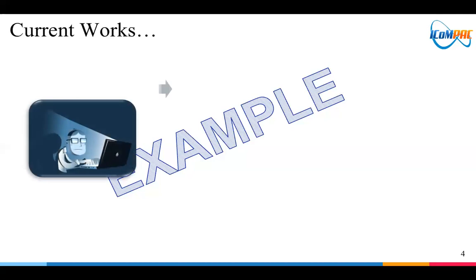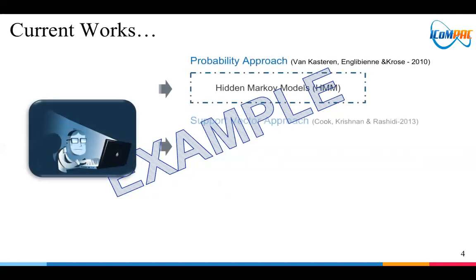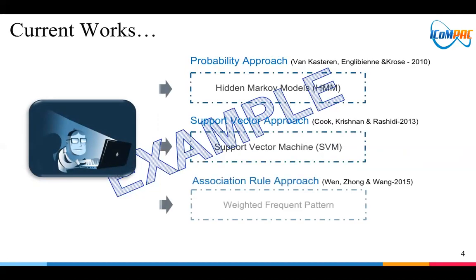For the current works, there are several studies about activity recognition using machine learning, such as Hidden Markov Model, Support Vector Machine, and Naive Bayes. In this research, we focus on activity recognition using data mining techniques.